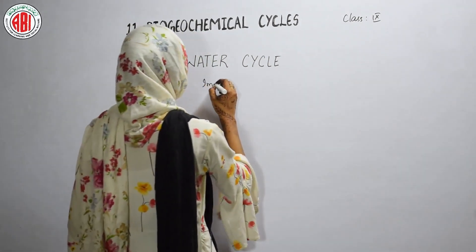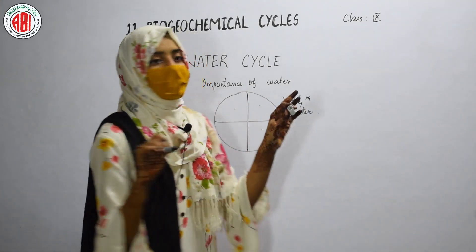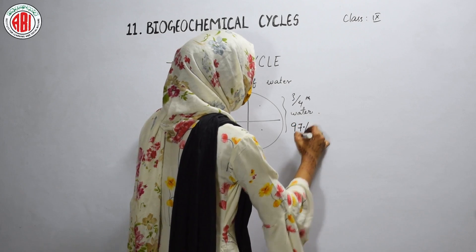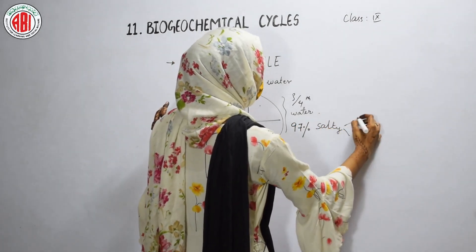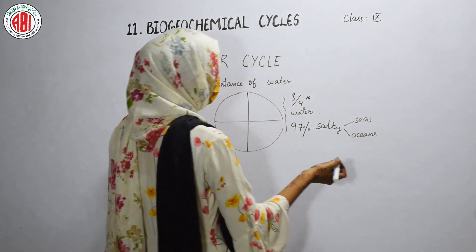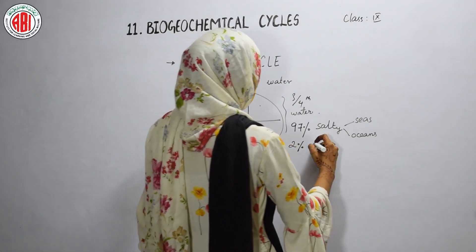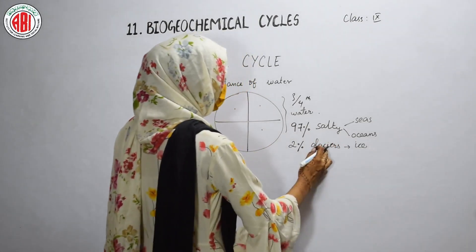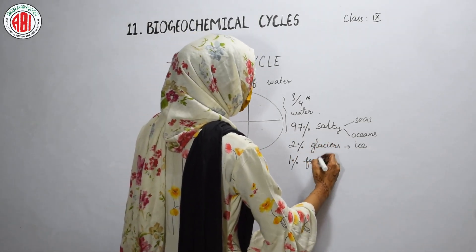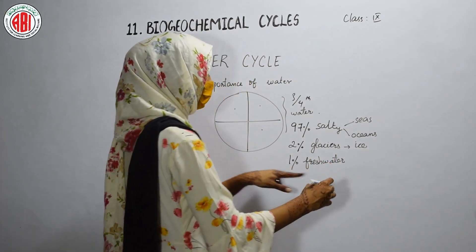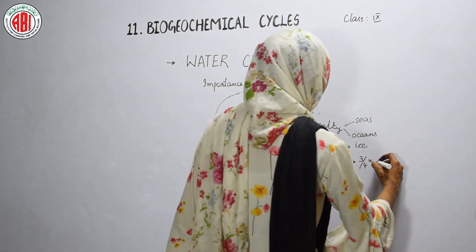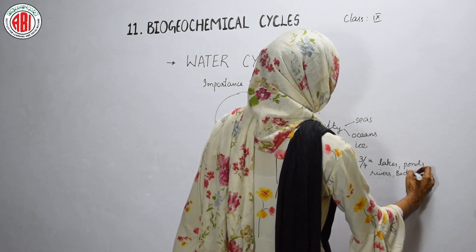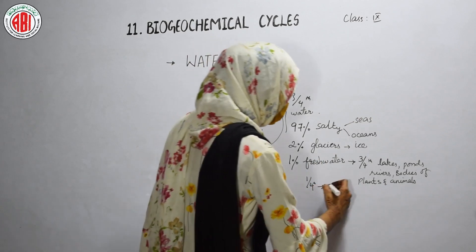Before we study the water cycle, let us discuss the importance of water. Three-fourths of the earth is covered with water. Even though water is present in a huge amount, out of the total water, 97 percent is salty — making up seas and oceans — and cannot be consumed directly by living organisms. Two percent forms glaciers: the ice caps on mountains. The remaining 1 percent is fresh water, and three-fourths of that fresh water makes up lakes, ponds, and rivers, and is also present in the bodies of plants and animals.